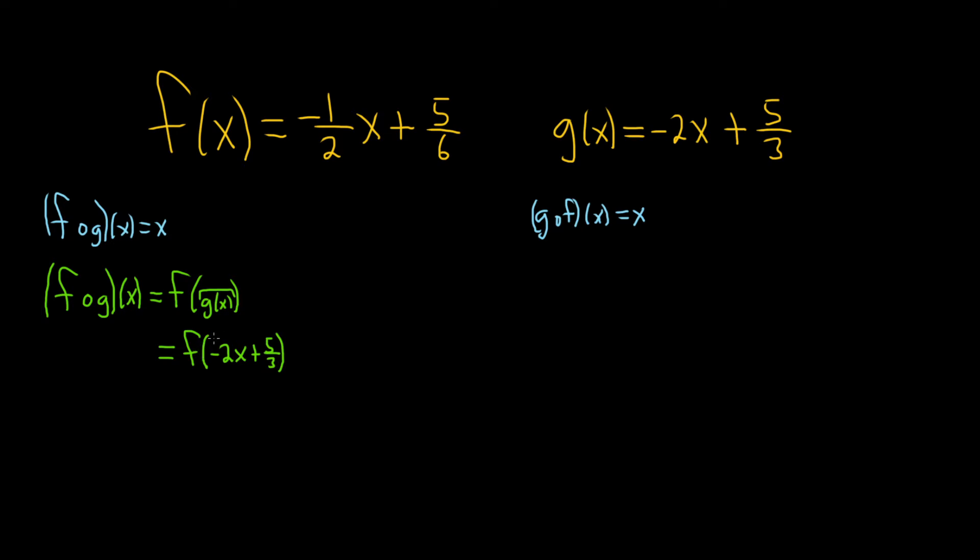And now we're told that we need to evaluate f of this thing here, this negative 2x plus 5 thirds. So that means we look at f, and this whole thing here is our x. So we're just going to replace the x in the formula here for f with this. So this is negative 1 half, parentheses, negative 2x plus 5 thirds, and then we have plus 5 over 6. Just replacing the x with all of this. It's negative 1 half blah plus 5 sixths.